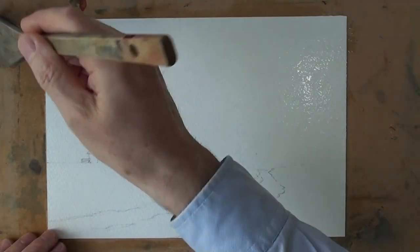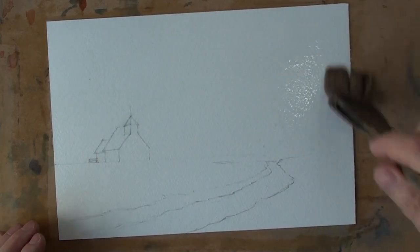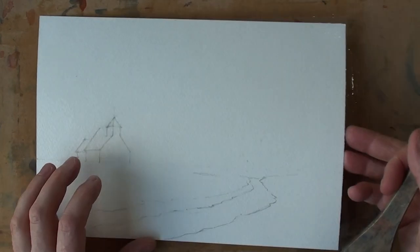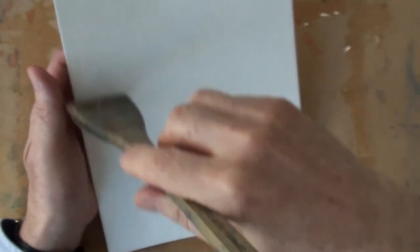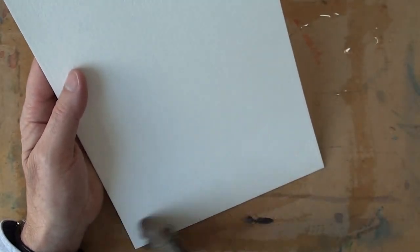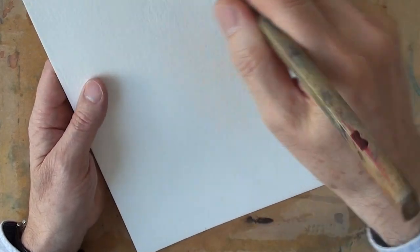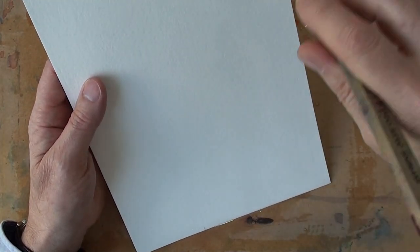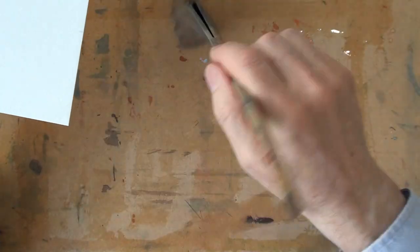This is a half sheet of quarter imperial 200lb Bockingford, just about to see where the sun is there. I wet the back, wet the board, this is a 12mm MDF board. Just make sure that is nicely evenly wetted.